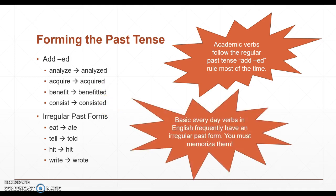On the other hand, we have these basic everyday English verbs, such as eat, tell, hit, write, and you can see that they follow irregular past forms. So again, academic words are actually easier when it comes to forming the past tense than the basic everyday English words.